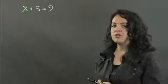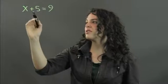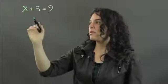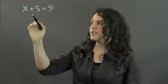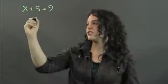In this case, we're going to use the inverse operation. So we look at what is going on between x and 5 because we want x alone. And what we have is addition. So in order to get x alone and get rid of the 5, we're going to do the inverse of addition, which is subtraction.